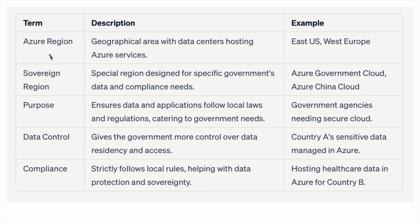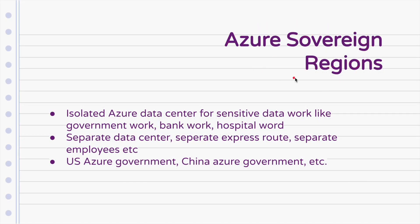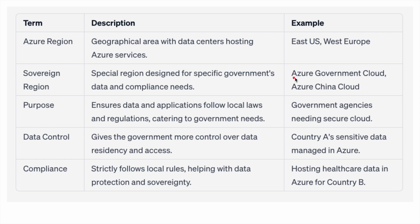The first term is: what exactly is an Azure region? It is a basic geographical area with data centers hosting Azure services — for example, East US and West Europe. Now we introduce sovereign regions. These are special regions designed for specific government data and compliance needs, known as Azure Government Cloud and Azure China Cloud. The purpose is to ensure data and applications follow local laws — the data laws for China are different, for the Indian government are different, and for the US government are different. Azure creates these regions and implements the laws and regulations as per government needs.